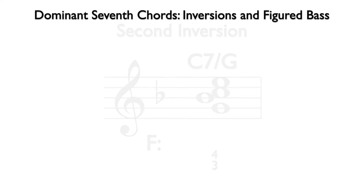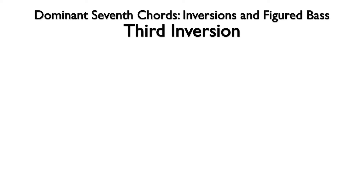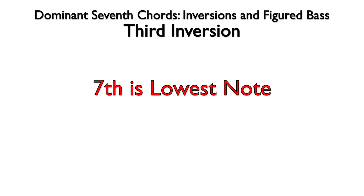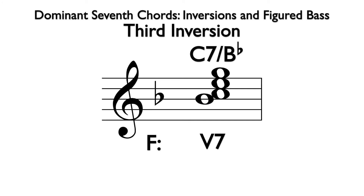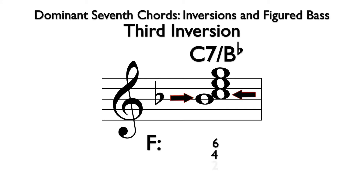Last, we will voice this chord in third inversion. A third inversion chord simply has the seventh as the lowest note. Here we are still using the C7 chord, V7 in the key of F, but now Bb is the lowest note. The chord symbol is C7/Bb, with C7 indicating the chord and Bb indicating the lowest note. From Bb to G is a sixth, Bb to E is a fourth, and Bb to C is a second. So the longhand figure is 6-4-2, typically abbreviated to 4-2.